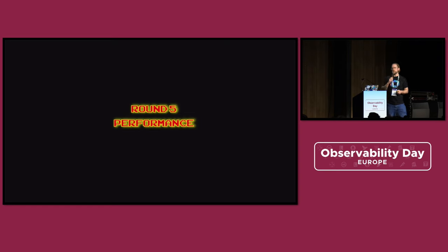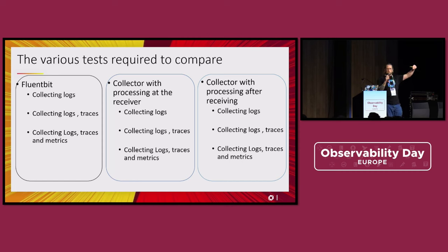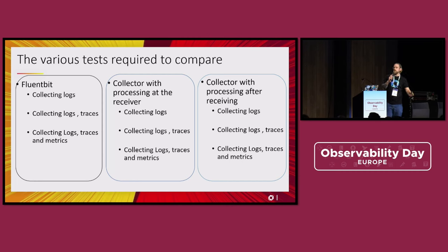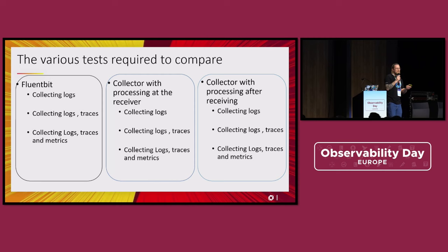Round five: performance. I did various tests. Since we saw different features are supported on each agent, I decided to test a pipeline with logs, then logs and traces, then logs, traces, and metrics — comparing FluentBit versus the Collector. With the Collector, you can do processing in two different ways: at the source, or afterward in a transform processor. So there are two ways of doing it — I thought I could test both and figure out which is the best solution.